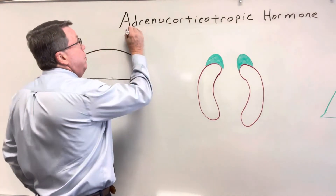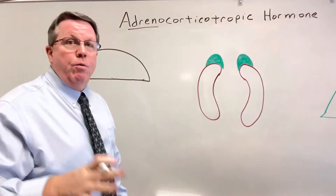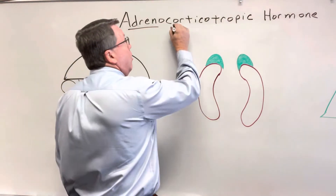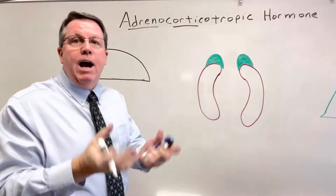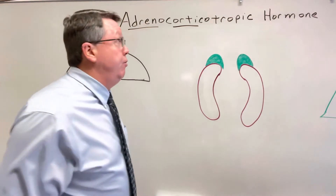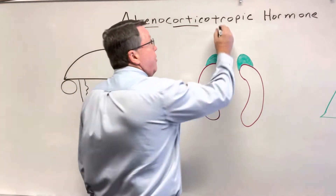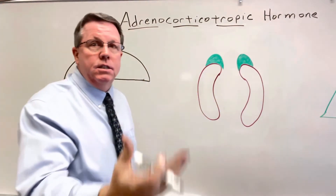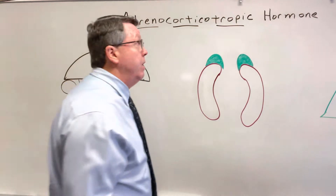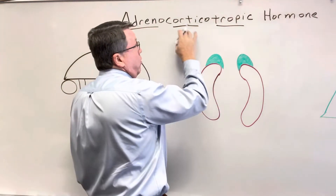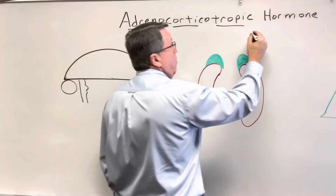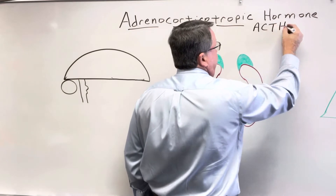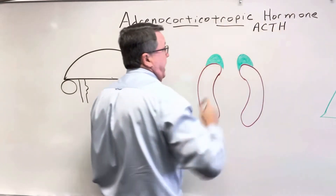Adrenal means it pertains to the adrenal gland, which we'll be talking about in just a few minutes. Cortical means it's in the cortex, which is the outer part of the adrenal gland. And tropic means this hormone is going to cause the release of another hormone. So instead of saying adrenocorticotropic hormone all the time, we're just going to abbreviate this as ACTH.